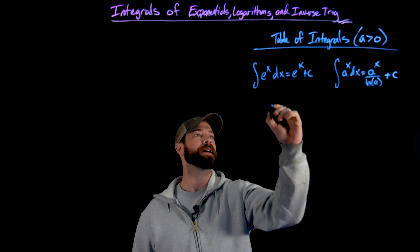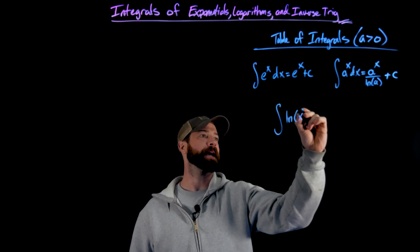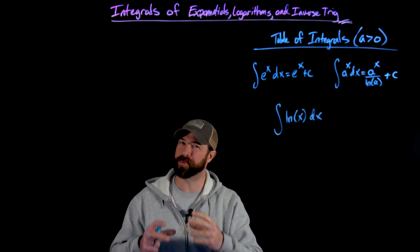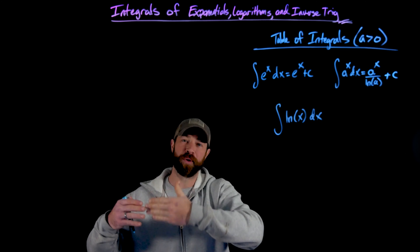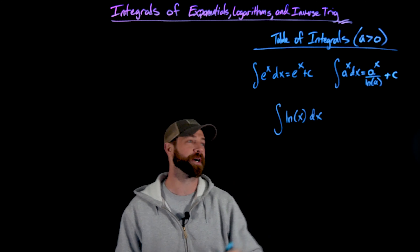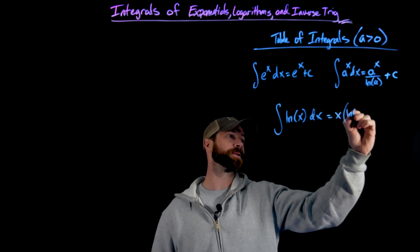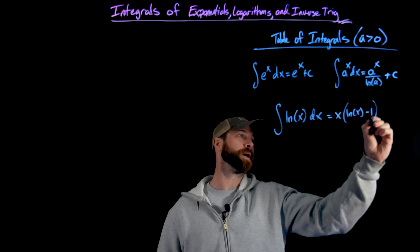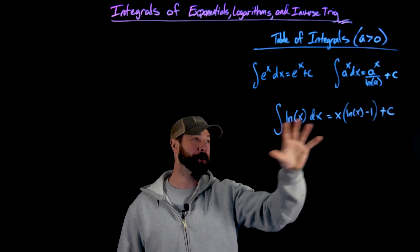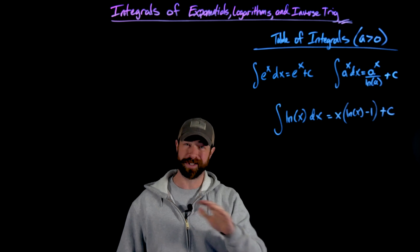Now on to the logarithmic integrals. First, the natural log of x. You might think this has something to do with 1 over x, but that's the integral of 1 over x equaling the natural log — here we're taking the integral of the natural log. This ends up being x times the natural log of x minus 1, plus c. We don't have the tools quite yet to evaluate this, but we could do it with integration by parts, which is coming next.